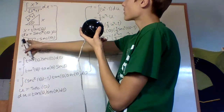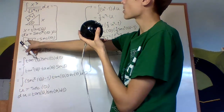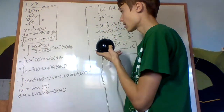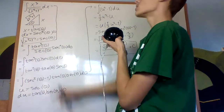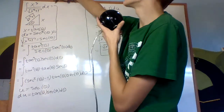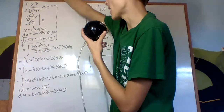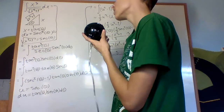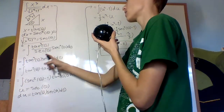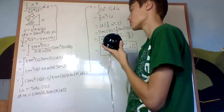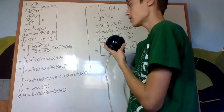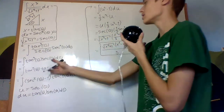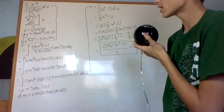We also know that square root of x squared plus 1 is secant theta in this case. So what we can do is substitute it back into this integral and get tangent cubed of theta over secant theta times secant squared theta d theta, which simplifies to tangent cubed theta secant theta d theta.